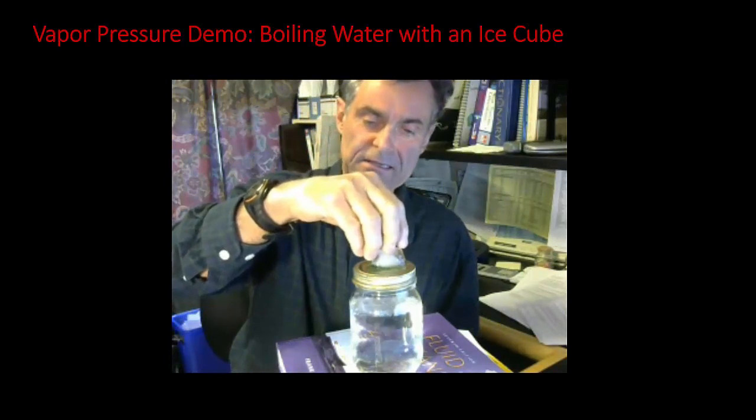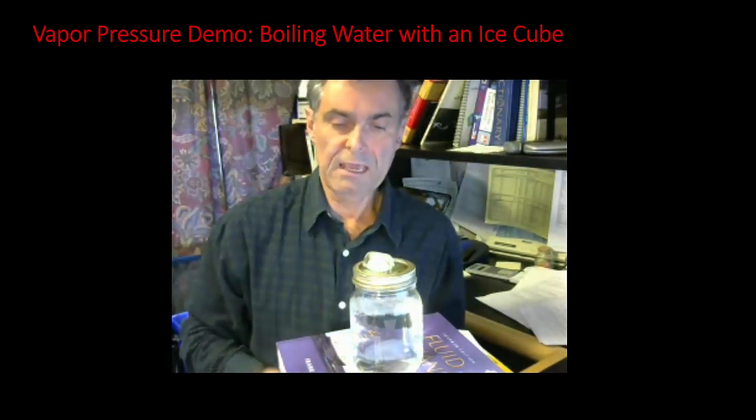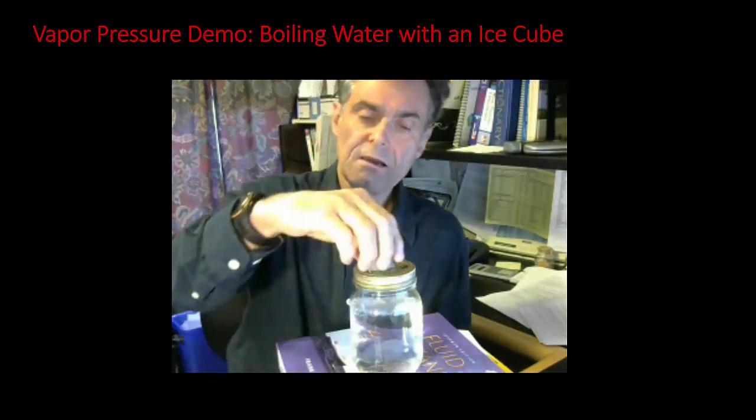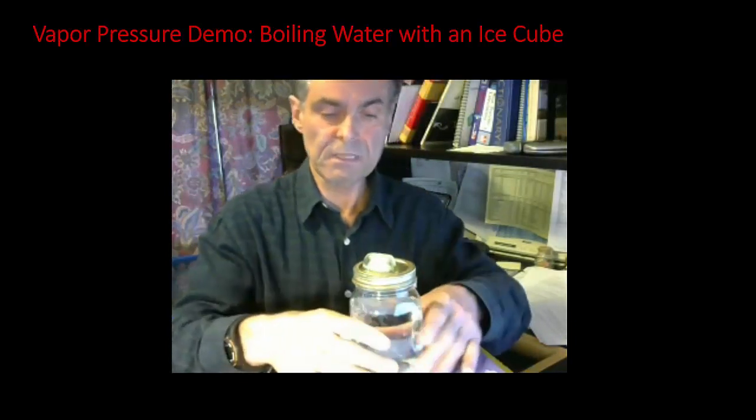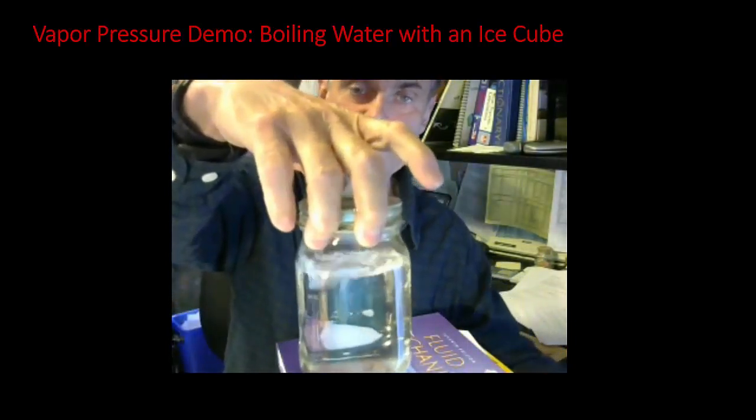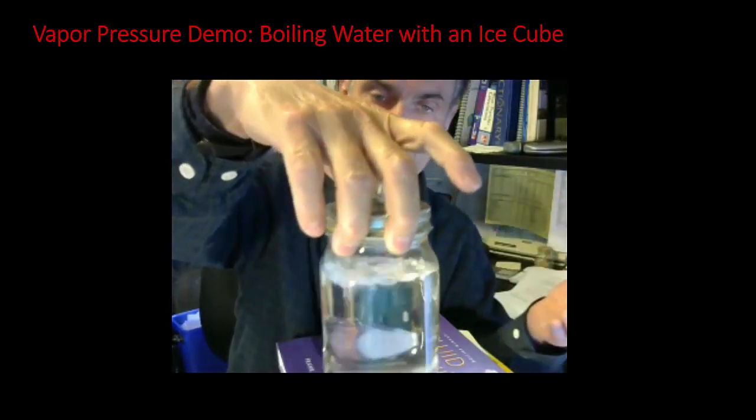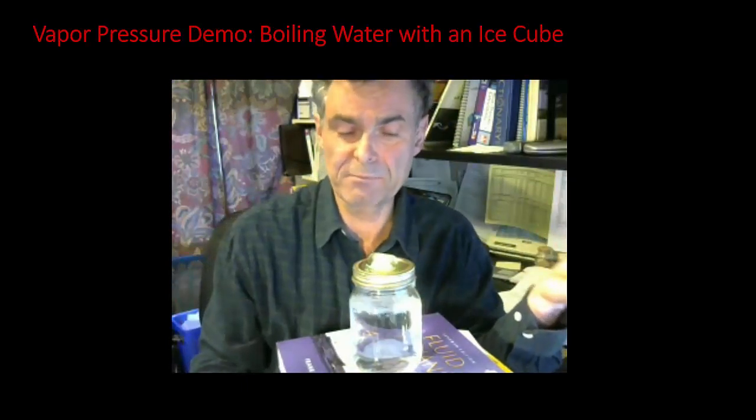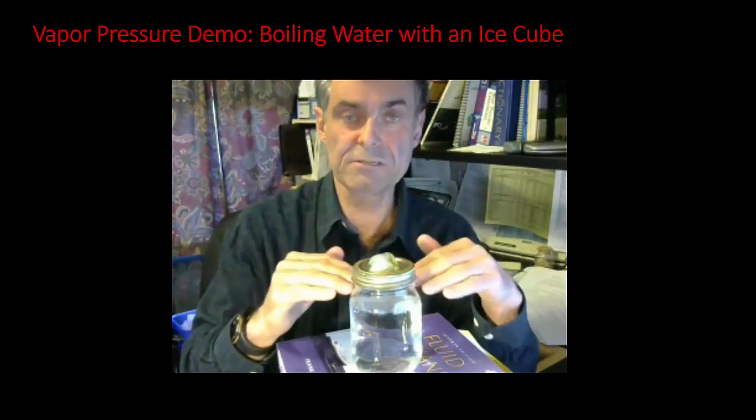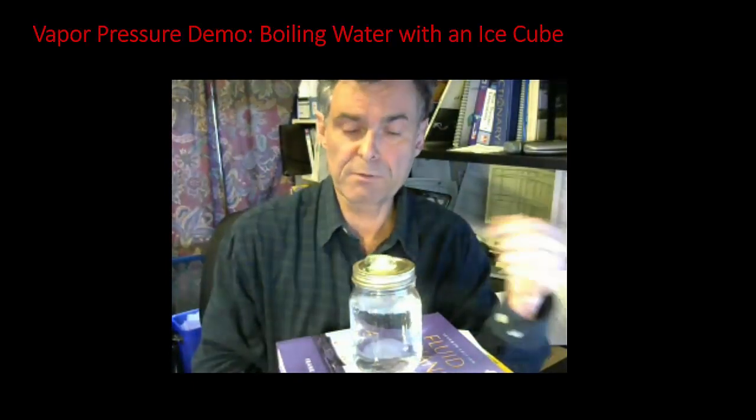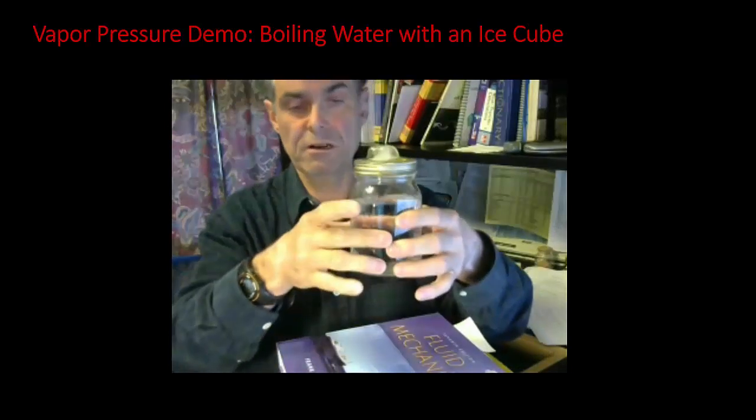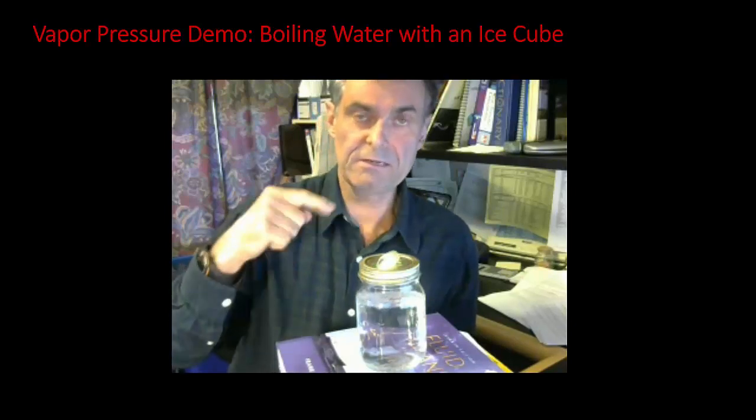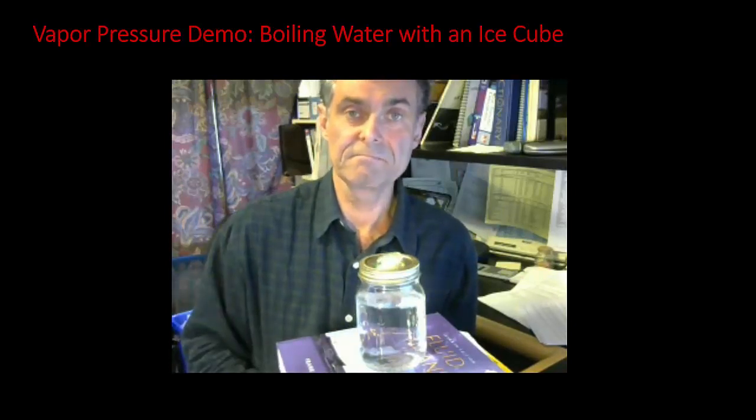What's happening here is I have a saturated mixture of water. Before I put the ice cube on, it was in equilibrium at a temperature substantially below boiling. When I put the ice cube on top, vapor condenses onto the lid of the jar. The condensate is about a thousand times less dense than vapor. So when it condenses, it reduces the pressure in the top of the jar below the vapor pressure for the temperature of the jar, which is maybe 50 degrees C, and it causes it to boil. You can learn how to do this by checking out the next video.